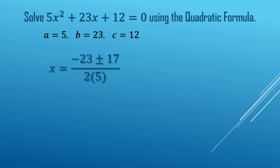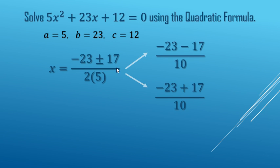Now we break it up into two different pieces. We're going to do the minus and then also the plus. So negative 23 minus 17, that's going to be negative 40 over 10, which makes negative 4.